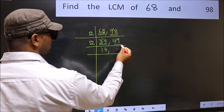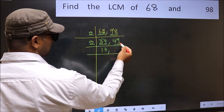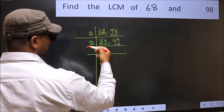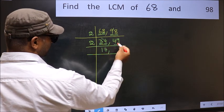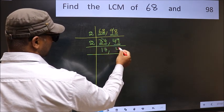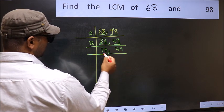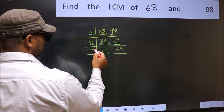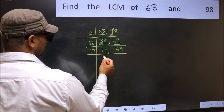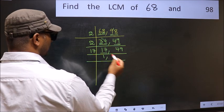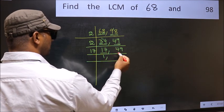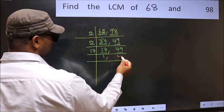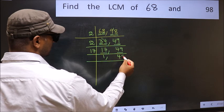Now the other number is 49. Last digit is 9, which is not even, so this is not divisible by 2 — write it down as it is. Now here we have 17. 17 is a prime number, so 17 divided by 17 is 1. The other number 49 is not divisible by 17, so write it down as it is.